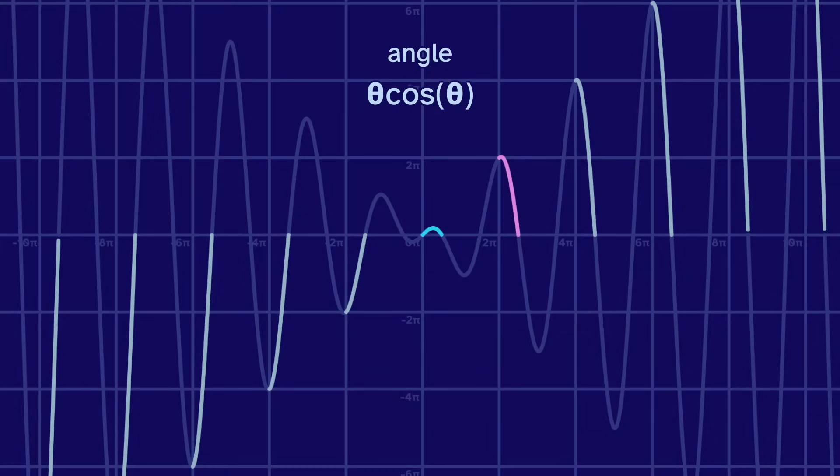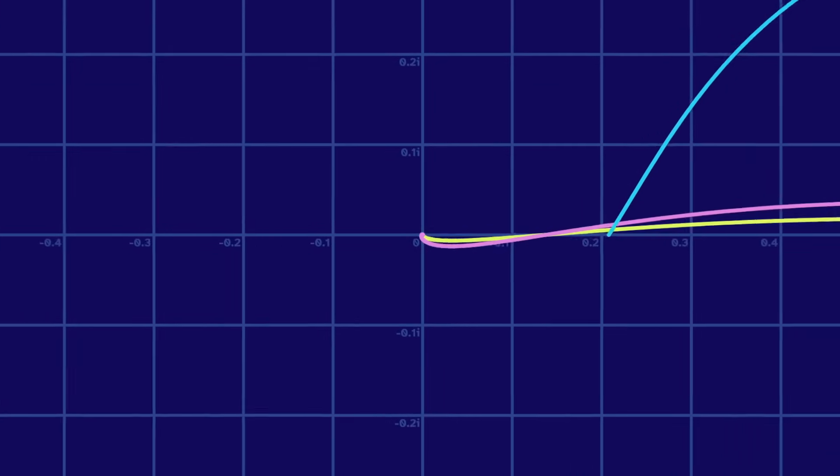On the second, we start at 2pi, increase a bit, then drop down to 0. On the third, we start at 4pi, then drop down to 0. And this pattern continues. Each successive lap starts 2pi higher, so it will take an extra loop to return to 0.